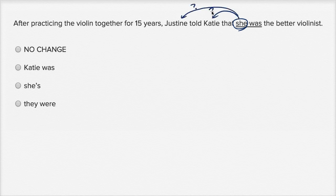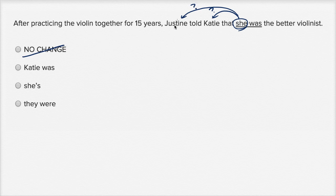It could be either one. Justine could be saying that Justine is better, or she could be saying that Katie is better. The way it's written, you do not know, which kind of makes the sentence fairly meaningless. So I definitely don't want to keep it the way it is. What I want is some clarity on who was the better violinist.